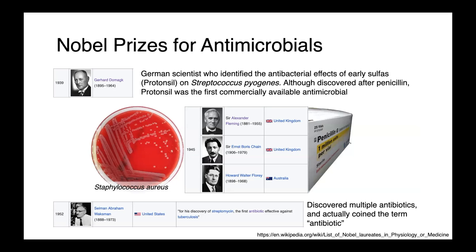The field of anti-infective biology has a number of Nobel Prizes within it, including Alexander Fleming, who was awarded the Nobel Prize in 1945 along with Ernst Chain and Howard Florey for the discovery and commercialization of penicillin. Prior to the clinical introduction of penicillin, sulfonamide-type drugs were used for treating Streptococcus infections, and although prontosil was discovered after penicillin, it was made commercially available first. And then finally, in 1952, we had the discovery of streptomycin, the first antibiotic active against tuberculosis.